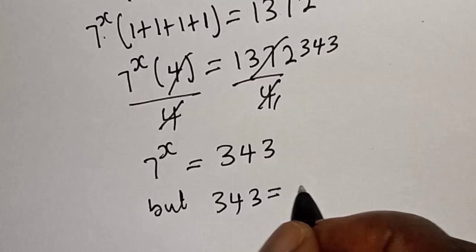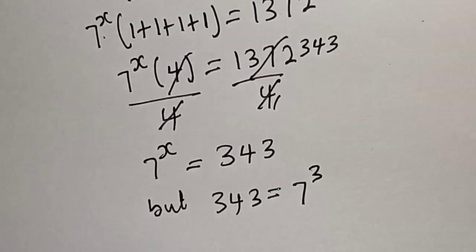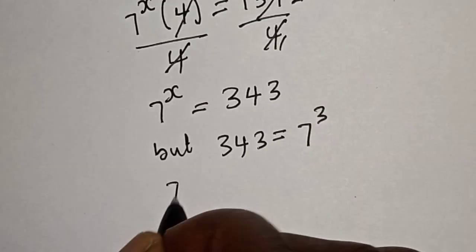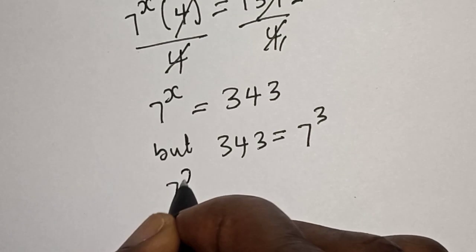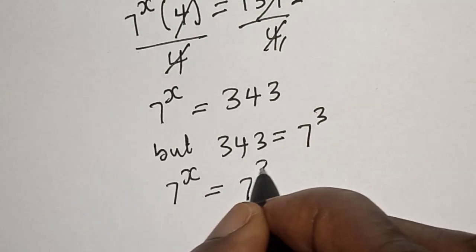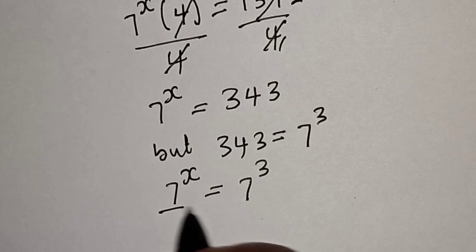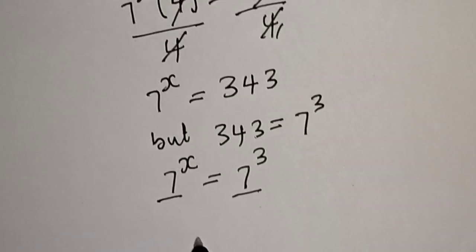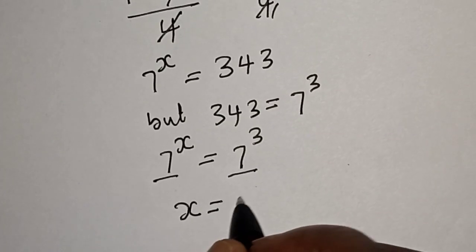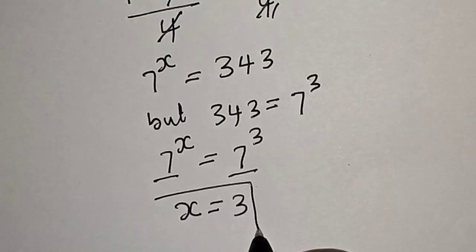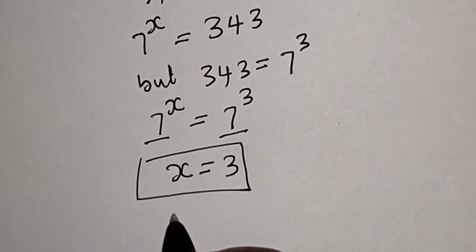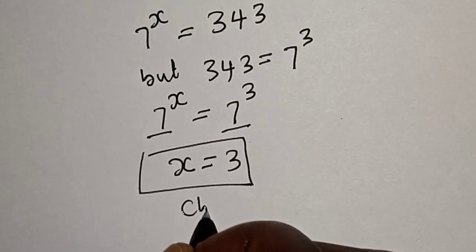343 is equal to 7 raised to power 3. Now we have 7 raised to power s is equal to 7 raised to power 3. We have the same base 7, therefore s is equal to 3. This is our final answer. We can check to confirm if our answer is right or wrong.